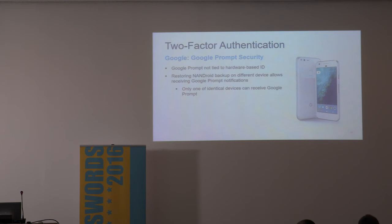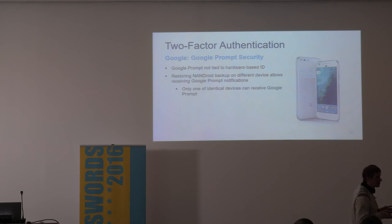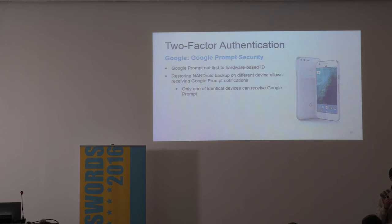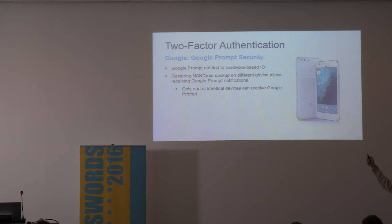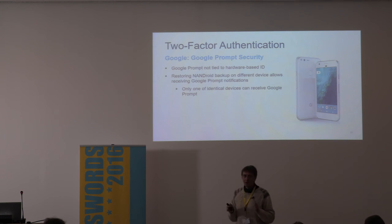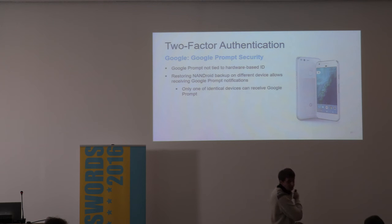Google Prompt is not tied to a hardware-based ID. Instead, a unique random identifier is generated every time you initialize a new device. Attacking Google Prompt is possible if you use a custom recovery to make a full Android backup of the device. Restoring that backup onto a new device of the same make and model will clone the entire device, and the new device will receive Google Prompts. TOTP-based authentication will work too. This is specific to Android — you cannot do this on Apple or Windows 10 Mobile devices.